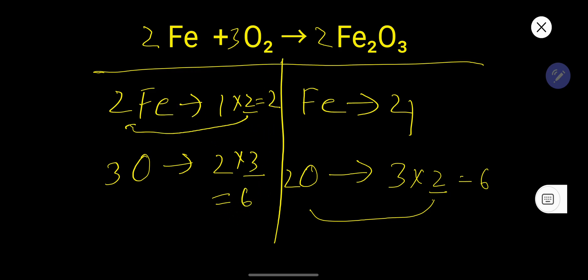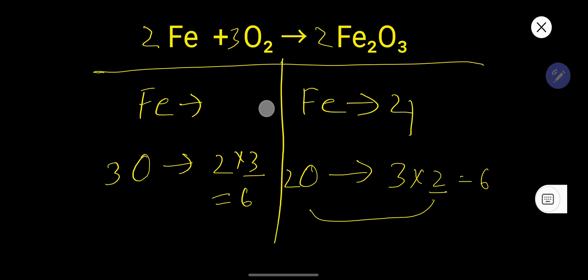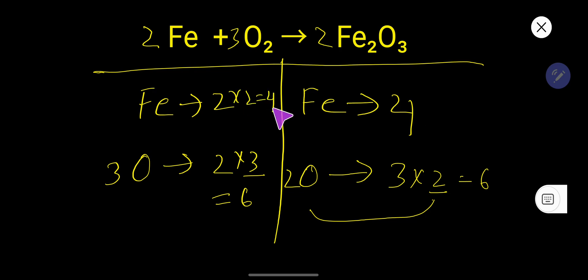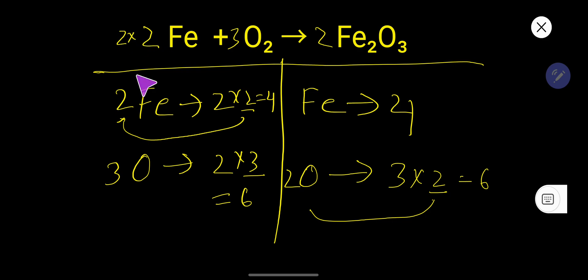Now look at the left hand side — the number of iron is 2, but on the right hand side the number of iron is 4 (2 times 2). So to balance iron you have to multiply by 2, giving us 4. Place 4 before Fe. Now we have 4 iron on the left and 4 iron on the right.